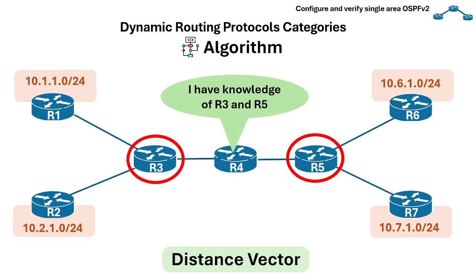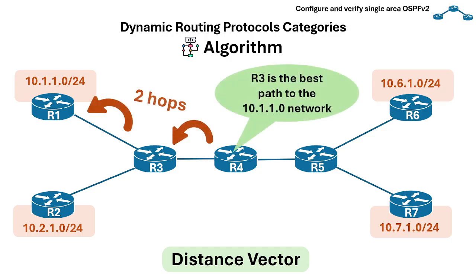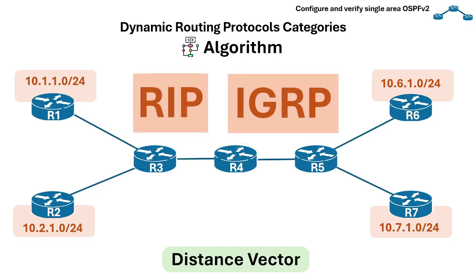Routers using distance vector protocols are only aware of their directly connected networks and the networks reachable through their neighbors. They determine the best path based on metrics like the number of hops or routers a packet needs to pass through. Examples of distance vector protocols are RIP and IGRP.